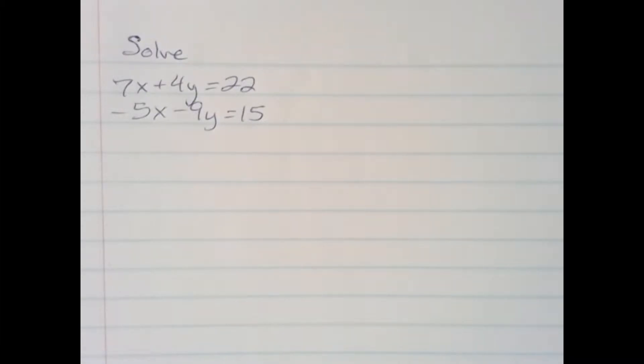Here we have a system of equations: 7x plus 4y equals 22, and negative 5x minus 9y equals 15. I'm going to solve it using the elimination method.